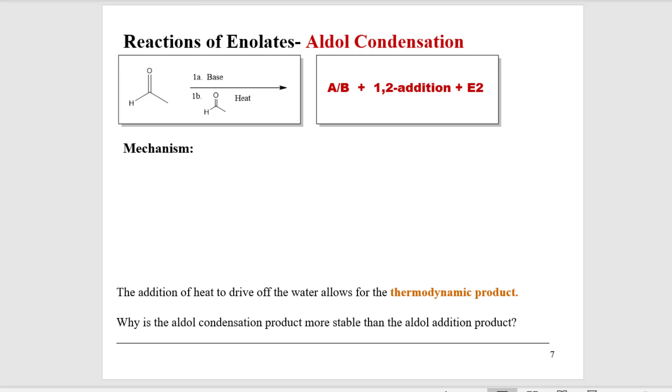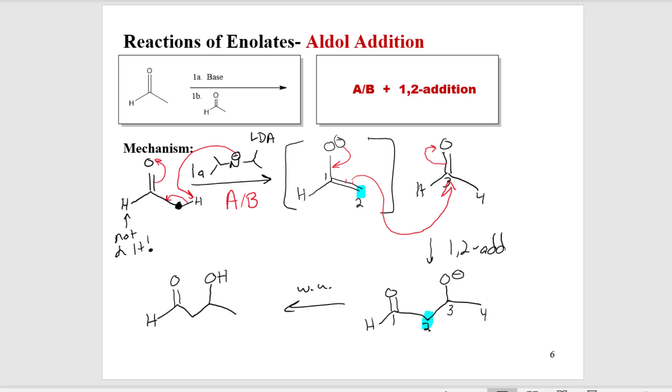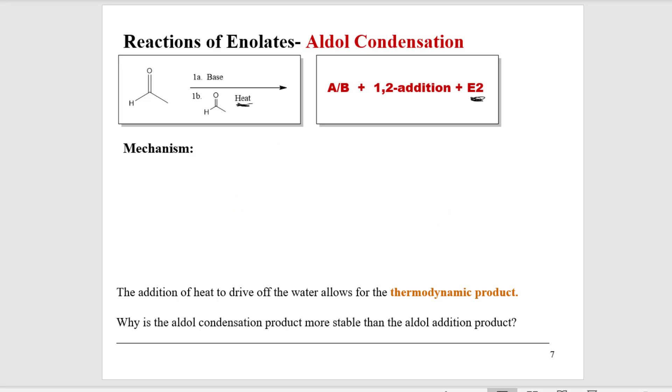All right, one more. We're going to do an aldol condensation. Now, notice the difference here. I'm adding one more mechanistic step. Why E2? Well, since I'm under strongly basic conditions, I'm going to add some heat and drive it forward to something that's a little bit more stable. Without the heat, we stop. Notice that I didn't write heat, and this is all the same stuff. This is the same reaction, in a sense, except I didn't have heat here. I'm not driving the reaction forward irreversibly. Here, I'm adding heat. So let's take a look at this.